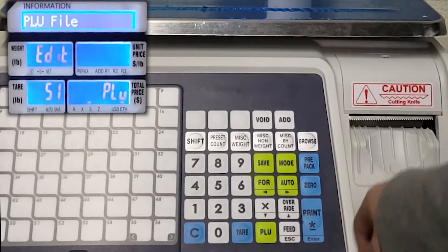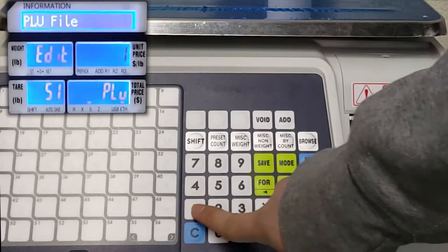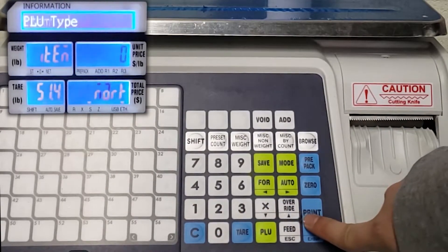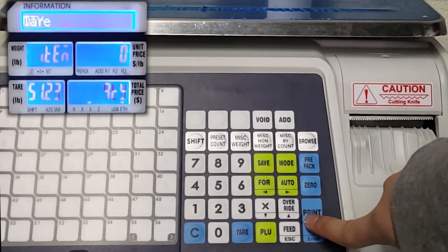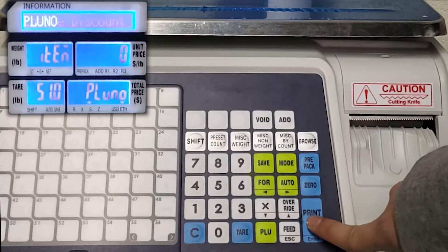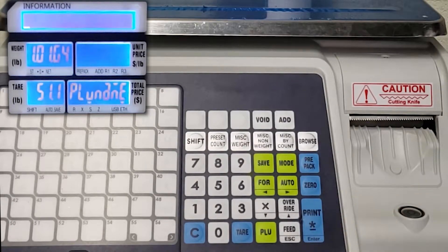I press mode two times and enter my PLU number. And while going through these, you'll see that it won't show print sell by anymore. So yeah, that's how you change your PLU menu.